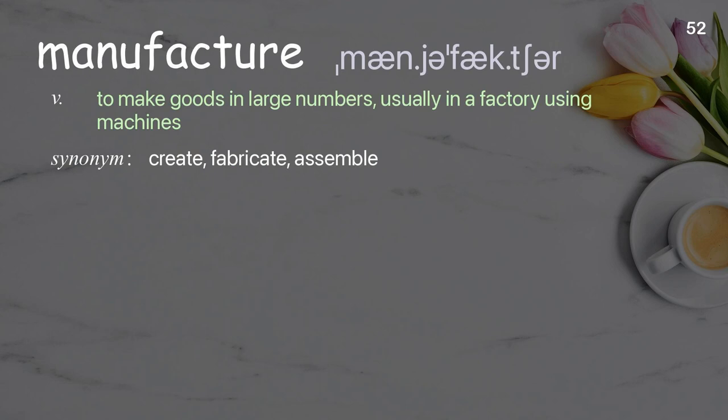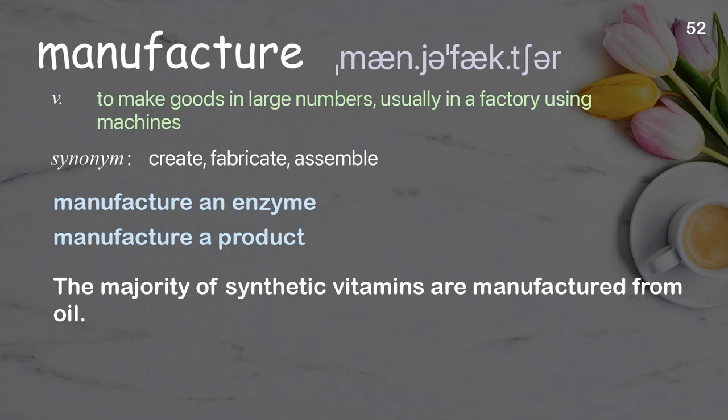Manufacture. To make goods in large numbers, usually in a factory using machines. Examples: manufacture an enzyme, manufacture a product. The majority of synthetic vitamins are manufactured from oil.